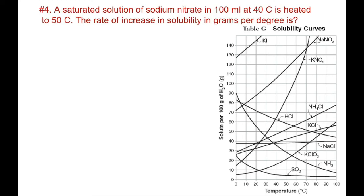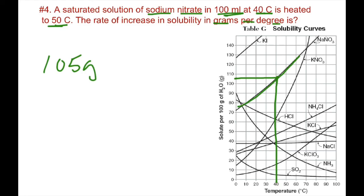The last question: a saturated solution of sodium nitrate — NaNO3 — at 100 mLs is heated from 40 degrees C to 50 degrees C. What is the rate of increase in solubility in grams per degree? We find the NaNO3 line, go to 40 degrees, move up to the line, and read across to the y-axis — approximately 105 grams at 40 degrees C.